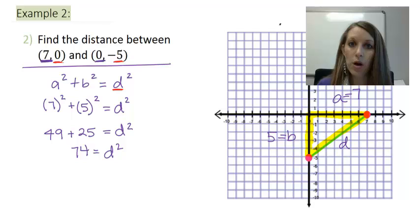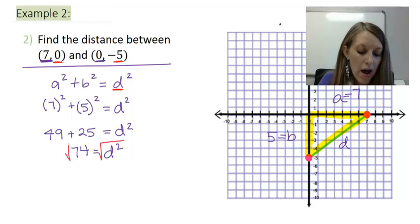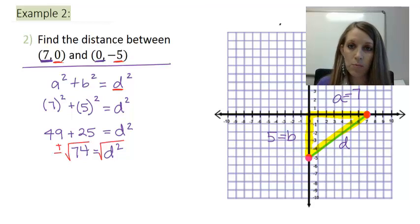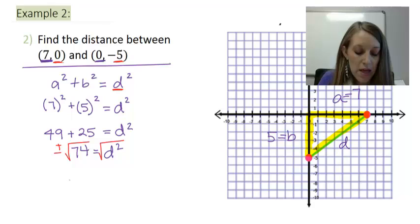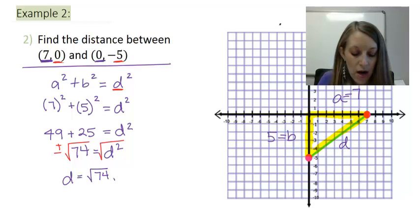So, I need to get rid of the square off of that D. My opposite operation is square root. Whenever I force in a square root, I also should be forcing in both a positive and negative, so two solutions. So, that gives me that D is equal to √74 and D is equal to -√74.